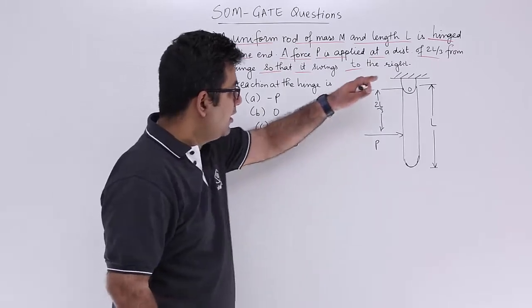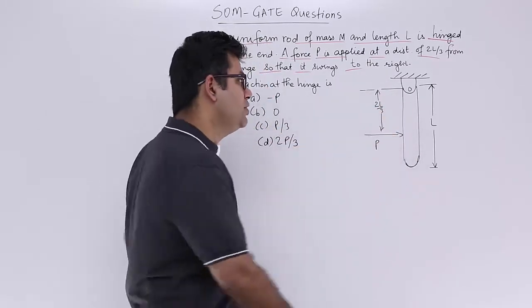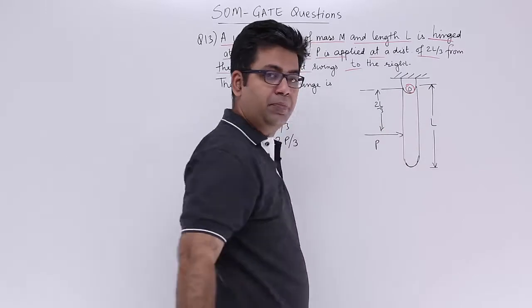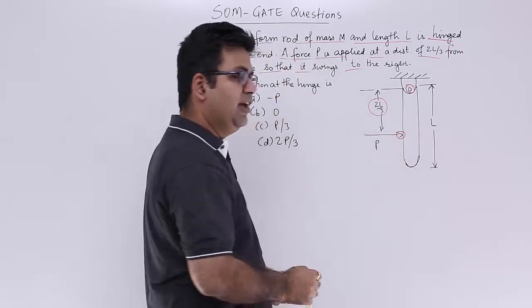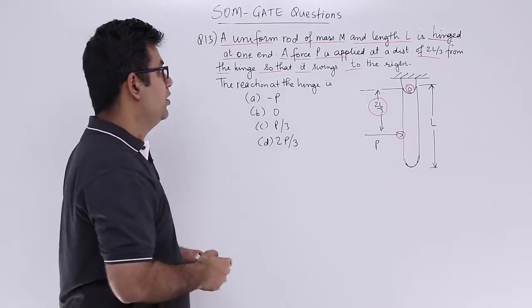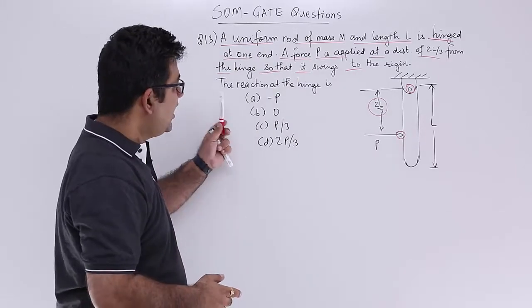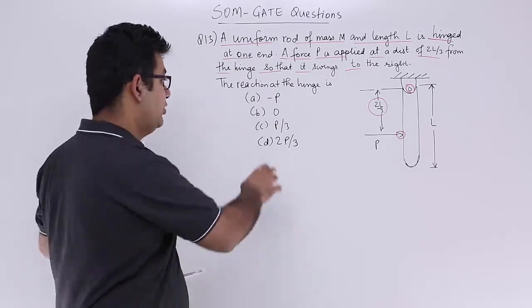So this is the configuration which is given to you. This is the rod which is hinged at this point. We are applying the load P at a distance of 2L by 3 from the hinge. The reaction at the hinge is what? One of these four options.